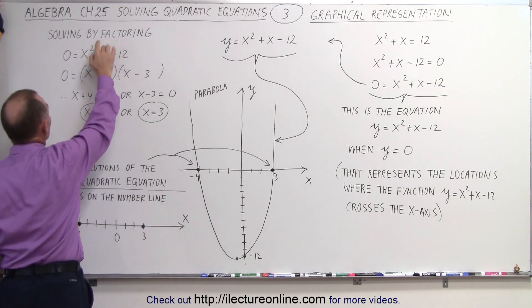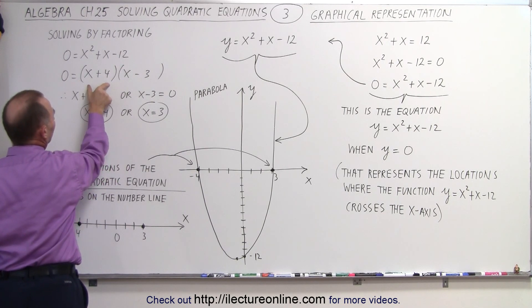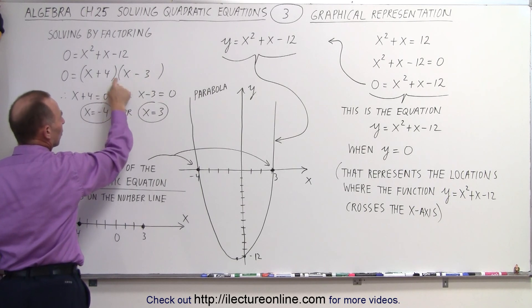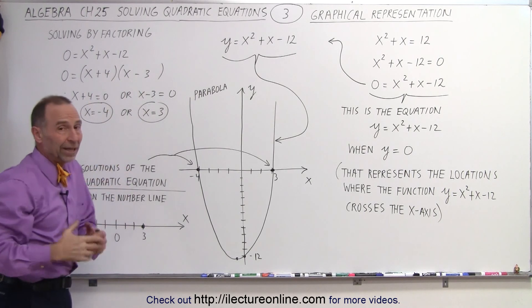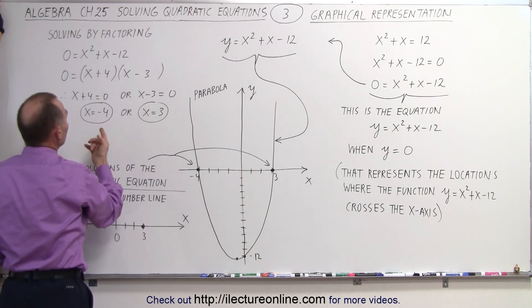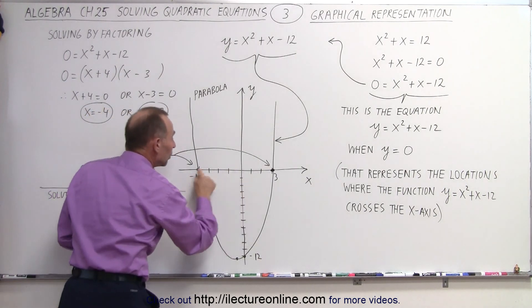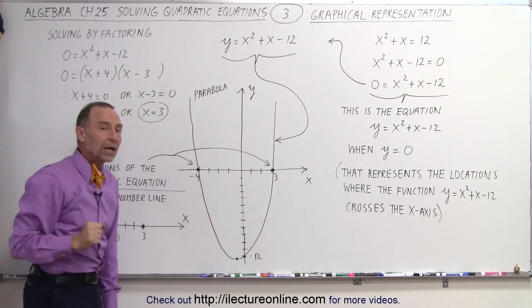We learned it by factoring. So if we take this equation here and we factor it, notice we had 0 equals x plus 4 times x minus 3. When we multiply binomials together, we get 0. That means either one or the other is equal to 0, which means either x equals minus 4 or x equals 3. So those are the two solutions to the quadratic equation.